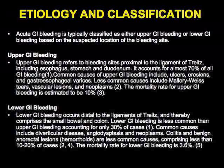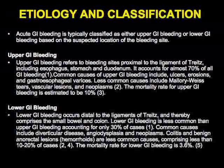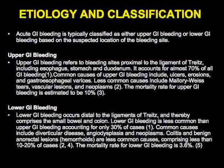Lower GI bleeding is less common, accounting for about 30 percent of cases, with a range of causes including diverticular disease, angiodysplasia, colon cancer, Crohn's disease, vascular malformations, and various tumors. The mortality rate is a bit lower for these patients — under four percent.